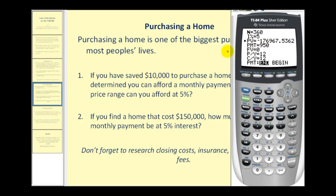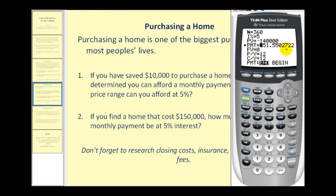Since we have $10,000 saved up, we could purchase a home that's worth roughly $187,000. The second question states: if we could find a home that costs $150,000 instead of maxing out our loan amount, how much would this save us per month? We change the present value of the loan — it actually wouldn't be $150,000; it would be $140,000 because we have $10,000 for the down payment. So we enter a present value of negative $140,000. We go down to our payment, clear this, press alpha enter, and instead of paying $950 per month, we would be paying just over $750 per month — a large drop in the monthly payment.